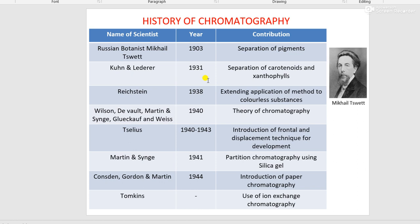A group of scientists — Wilson, DeWalt, Martin and Synge, Glukov and Weiss — in the year 1940 proposed the theory of chromatography. In the span of 1940 to 1943, various developmental techniques such as the frontal technique of development and the displacement technique of development were proposed by Tiselius. In 1941, Martin and Synge performed partition chromatography using silica gel. In 1944, three scientists — namely Godson, Gordon, and Martin — introduced paper chromatography, after which ion-exchange chromatography was evolved.